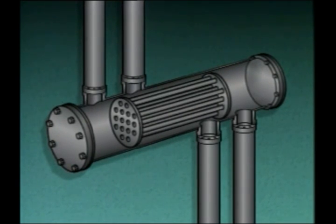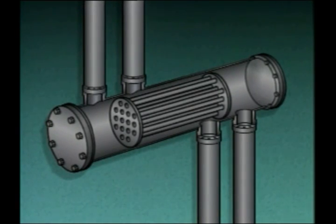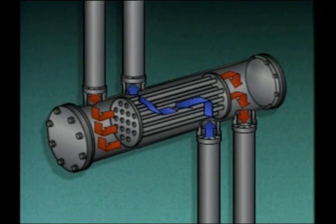The tube walls provide a surface area for heat transfer between the two fluids. Tube sheets support the tubes and help form the heads — the ends of the heat exchanger. The fluid that flows through the tubes enters and exits through the heads. In this heat exchanger, the hotter fluid flows through the tubes and the cooler fluid flows around the tubes. As the two fluids flow through the heat exchanger, heat transfers from the hotter fluid to the cooler fluid, so the hotter fluid is cooled and the cooler fluid is heated.